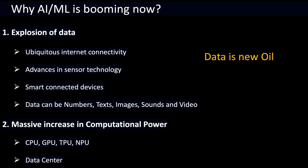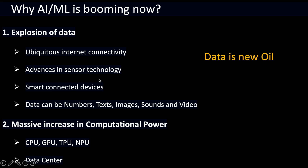Now let us close this session by understanding why ML is booming today. There are two main reasons: explosion of data, and a massive increase in computational power. The explosion of data is driven by ubiquitous internet connectivity, advances in sensor technology, and the rise of smart connected devices all around us. This data can take many forms: text, images, audio, or video.